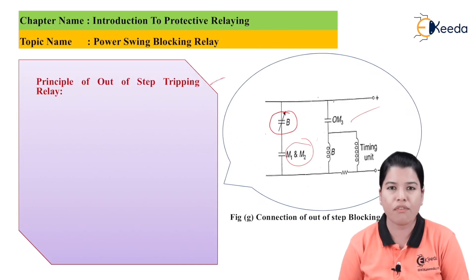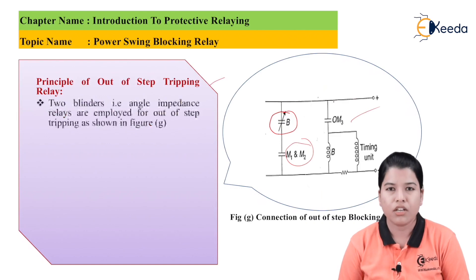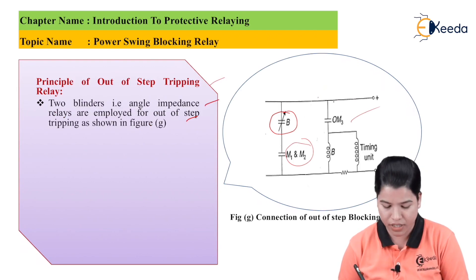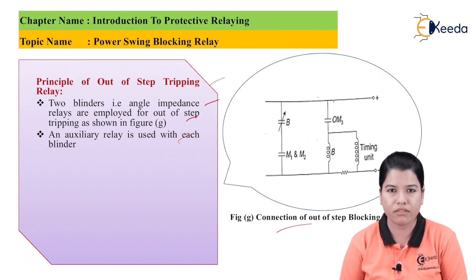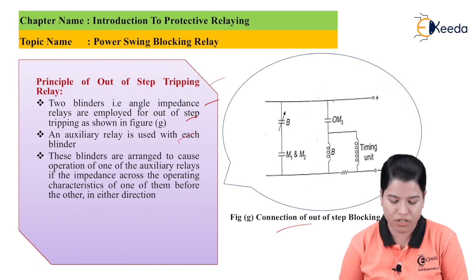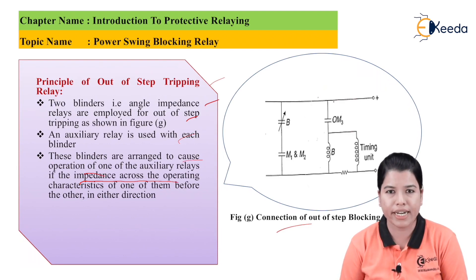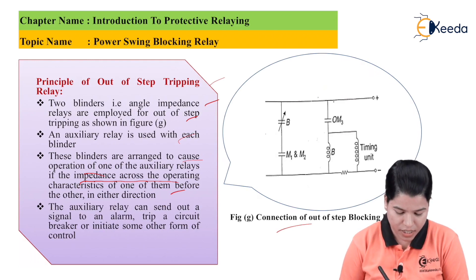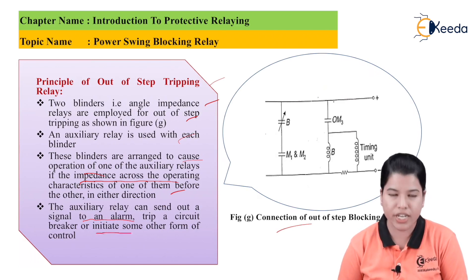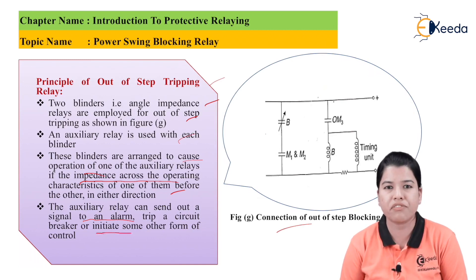Now let us study the principle of out-of-step tripping. Two blinders, which are angle impedance relays, are employed for out-of-step tripping as shown in figure G, and an auxiliary relay is used with each blinder. These blinders are arranged to cause the operation of one of the auxiliary relays if the impedance crosses the operating characteristic of one blinder before the other, in either direction. The auxiliary relay can then send a signal to an alarm, trip a circuit, or initiate some other form of control.